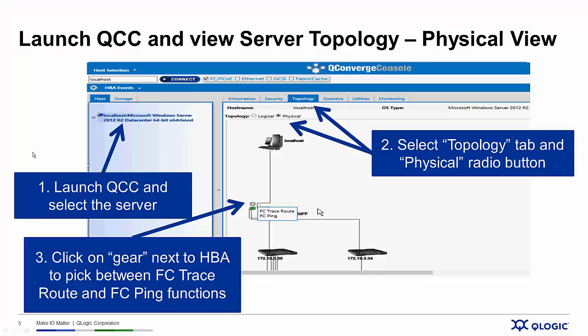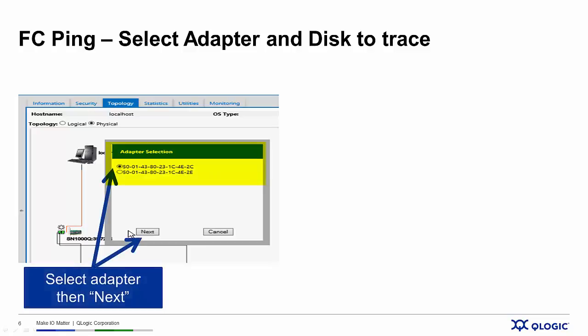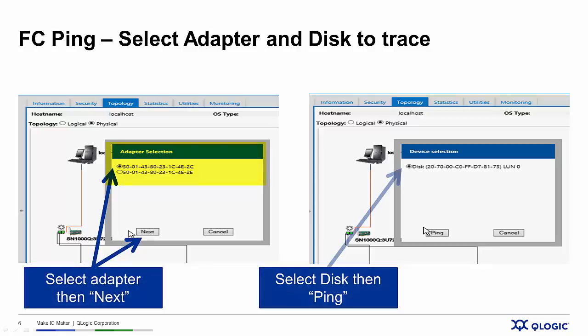So once we decide what we want to do, let's say we want to run FC-Ping. I click on FC-Ping, and a box pops up providing adapter selection. This particular adapter is a dual-port adapter, so I can pick either of the ports. Then I click the next button. A new window pops up, and this is where I pick the storage device I want to do the FC-Ping to. In my SAN environment, I only have one disk array connected, so I only have one choice, and then we hit the Ping button.